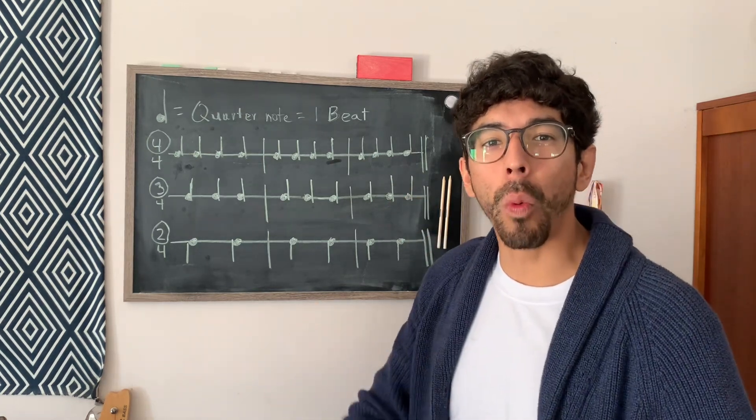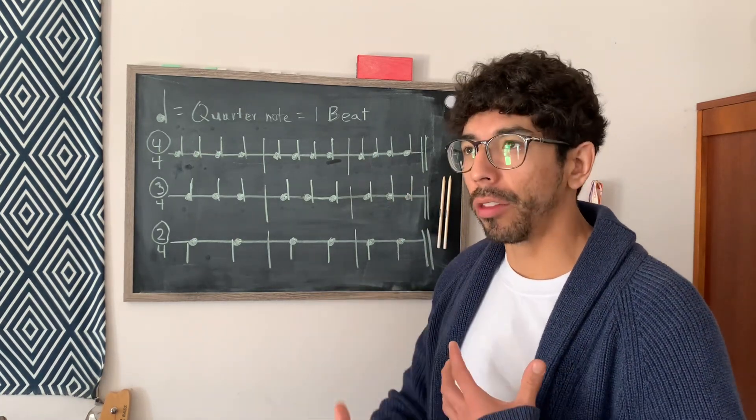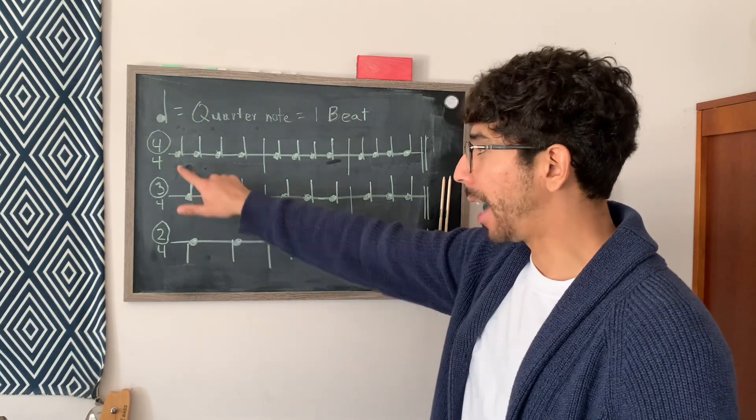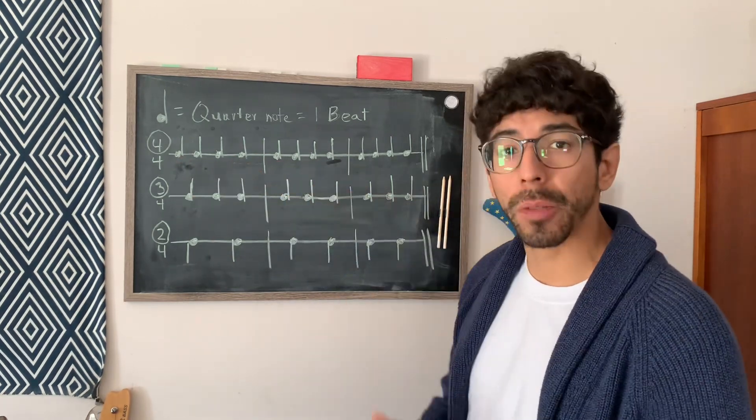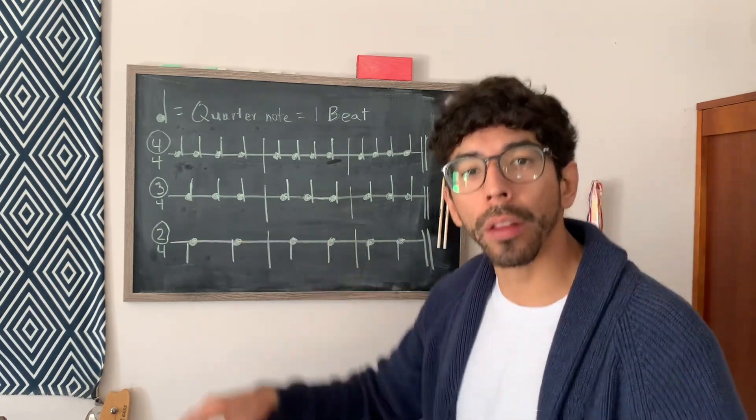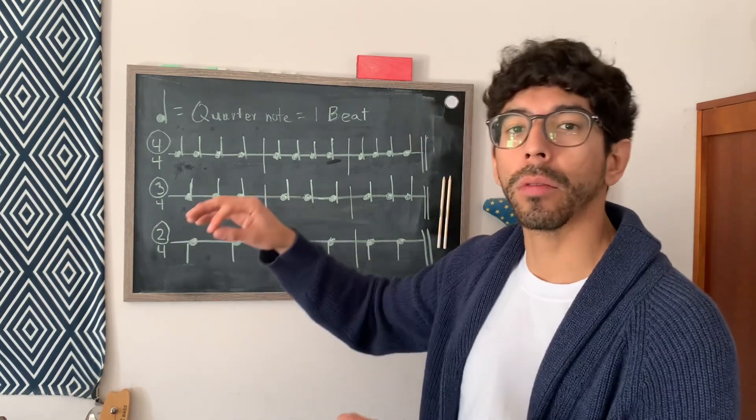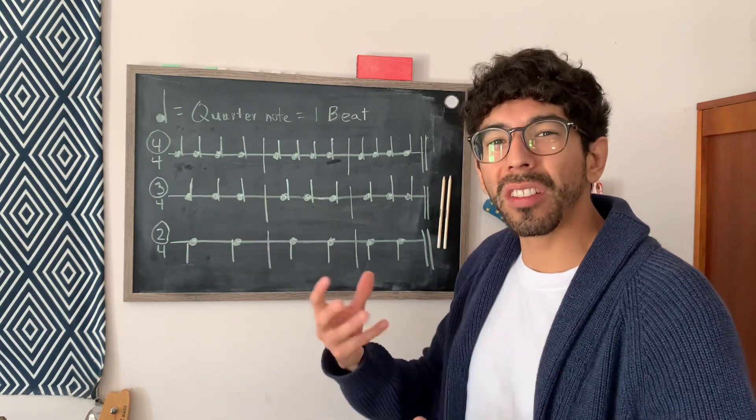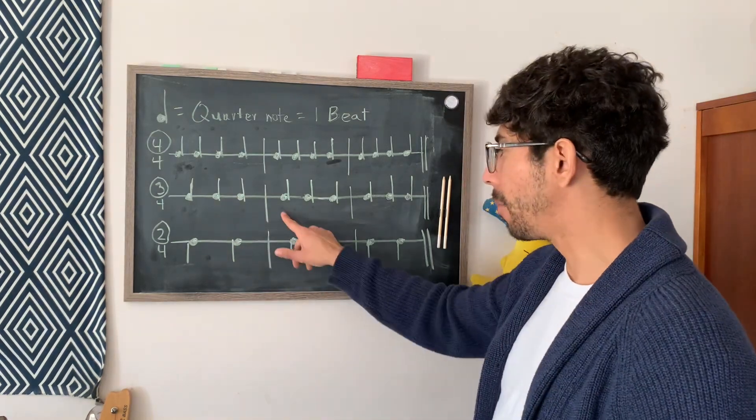And it has more of a waltz feel, you know? There's a little bit more emphasis always on the downbeat, which is the first beat of each measure. So if we're counting in threes, it's going to go 1, 2, 3, 1, 2, 3, 1, 2, 3. So there's just a little bit more emphasis on the downbeat.